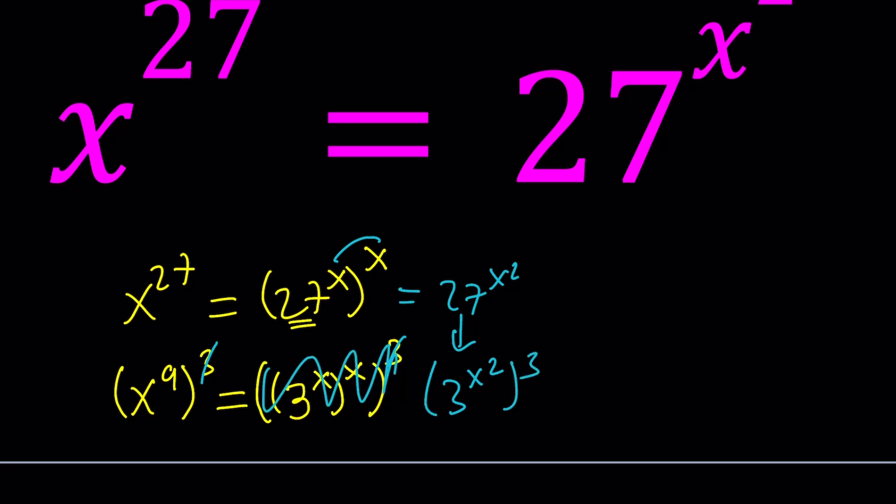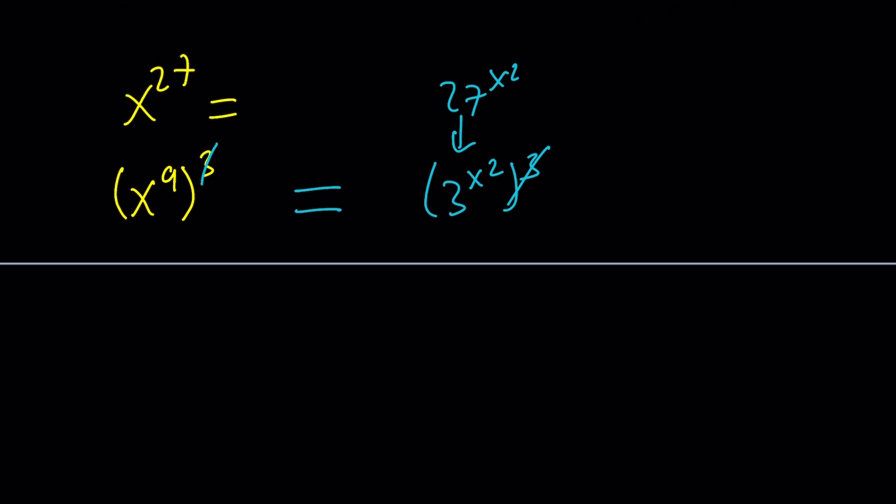From here, I didn't have to do this. I could probably just leave it at 27 to the x squared and then write this as 3 to the power x squared to the 3rd. So forget about all of this. This gives us a nicer expression, which I can write as x to the power 9 equals 3 to the power x squared. A little simpler, the numbers are a little smaller.